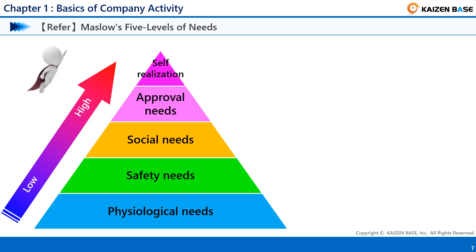Here, as a reference, we will explain human desires using Maslow's five levels of needs. This pyramid consists of five stages of needs. Starting from the physiological needs at the lowest hierarchy, the next level is safety needs, then social needs, approval needs, self-realization needs, and so on. When you are satisfied with one level, you move up to the upper level needs.